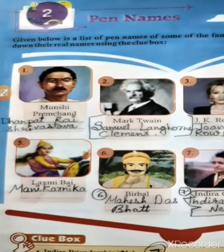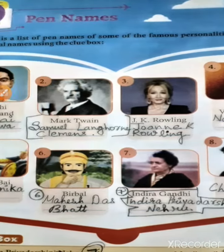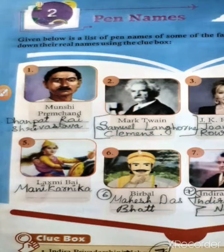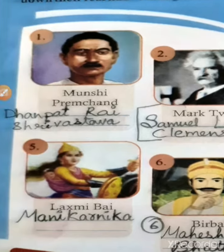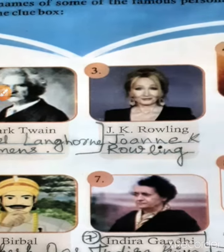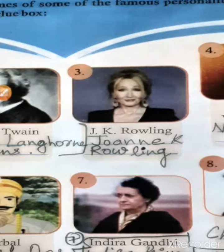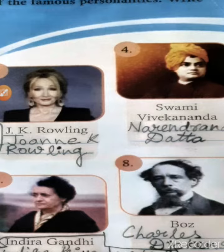Given below is the list of pen names of some famous personalities. Write down their real names using the clue box. Munshi Premchandra — Dhanpat Rai Shrivastav. Mark Twain — Samuel Langhorne Clemens. JK Rowling — Joanne K. Rowling. Swami Vivekanand —